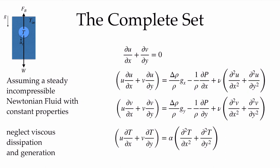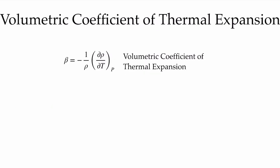Now, we need to think about a material property in order to expand this term and get a set of equations that we can solve. That material property is the volumetric coefficient of thermal expansion. This is relating the density change in a fluid to a temperature change — it relates the change in density with respect to temperature at a constant pressure. We can come up with an approximation that the change in density, rho infinity minus rho, is equal to rho beta times T minus T infinity.